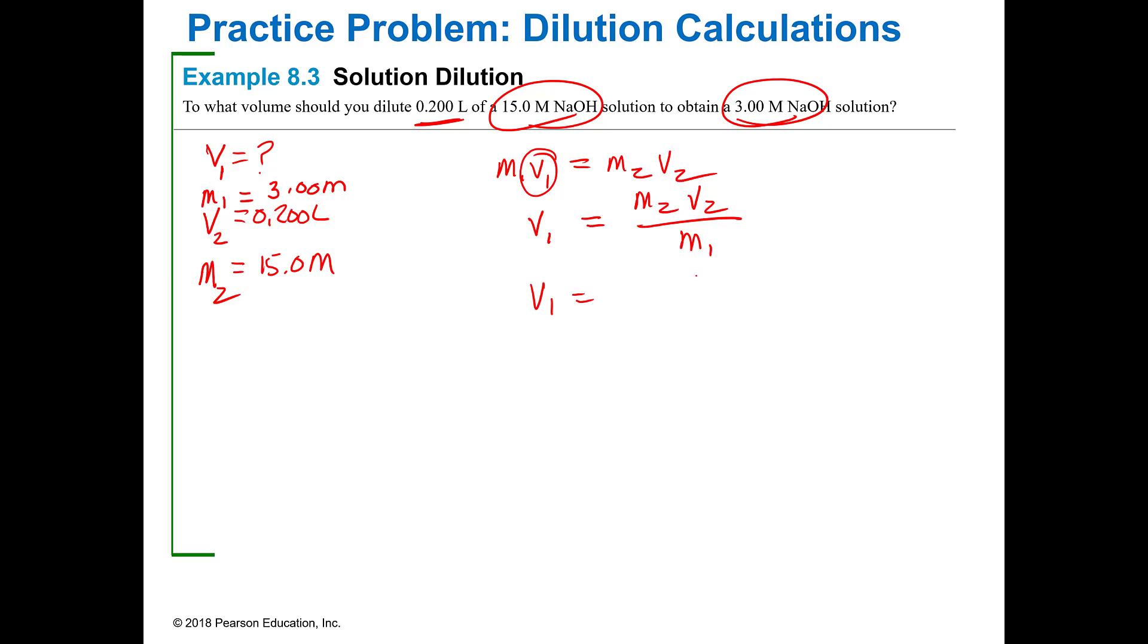So once I've done this, I just plug and play. M2 was 15 molar and it's all sodium hydroxide. So I don't even have to put that. That's how you can tell it's a dilution problem because you've got one condition of sodium hydroxide and you want to end up with another condition of sodium hydroxide. And then so V2, 0.2 liters divided by M1, which is 3 molar. And so when you do that, that's pretty simple math. That's going to be one liter, or a thousand milliliters. Same thing.